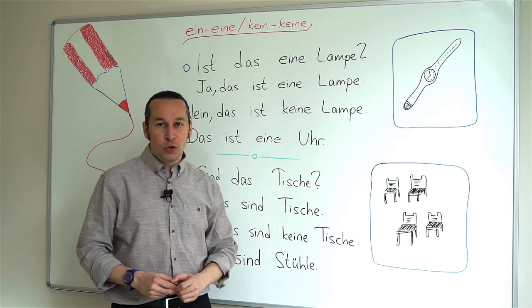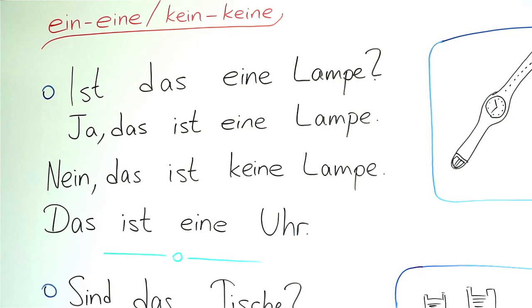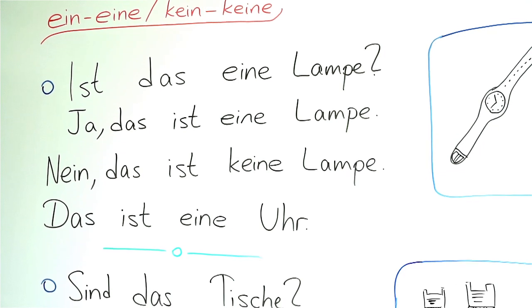Repeat after me please: Ist das eine Lampe? — Ja, das ist eine Lampe. — Nein, das ist keine Lampe. — Das ist eine Uhr.